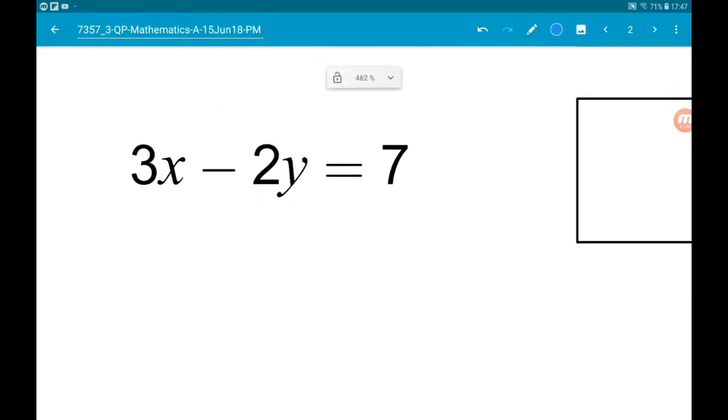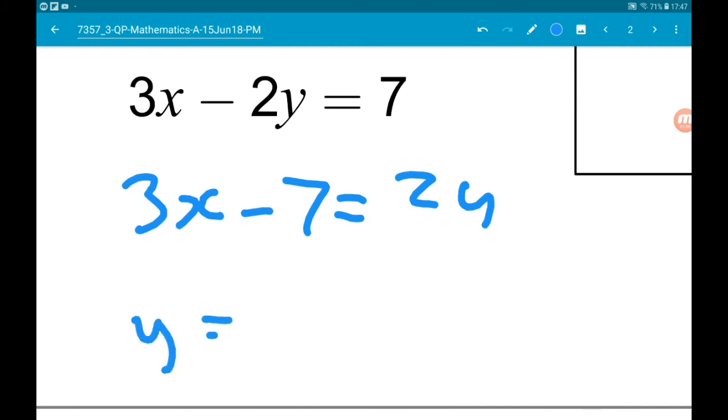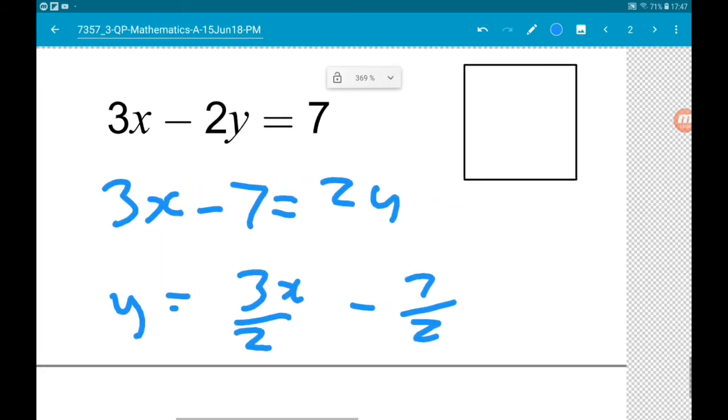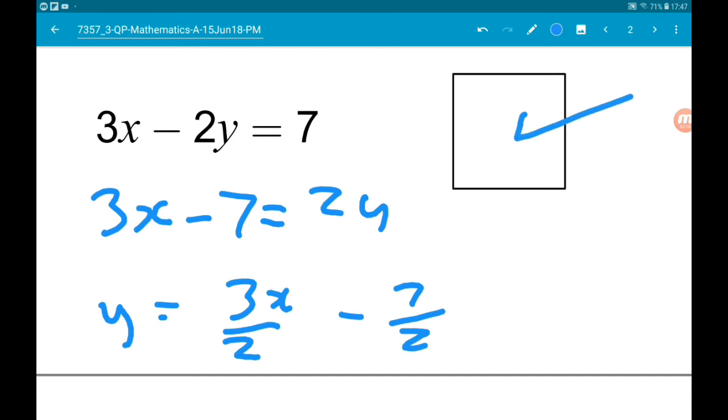So if we add 2y, we get 3x minus 7 is 2y. Therefore, y is 3x minus 7 over 2. So we got a gradient of 3 halves. It's this guy.